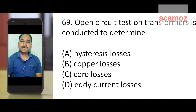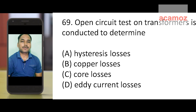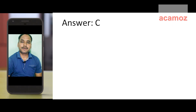Next question: the open circuit test of a transformer is conducted to determine — options: stress loss, copper loss, core loss, and eddy current loss. Generally the open circuit test is conducted to determine core loss, so the correct answer is option C: core loss.